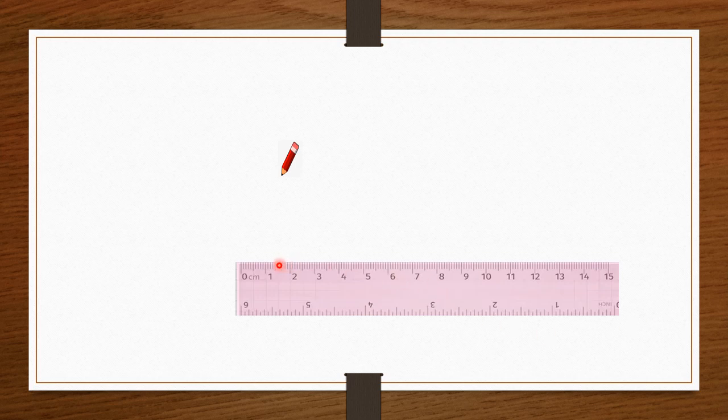First place your scale on a page like this that your cm part is on the upward direction. Now, if I have to draw a line of 4 cm, I will place my pencil on 0 and draw a line till 4 cm.